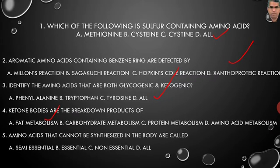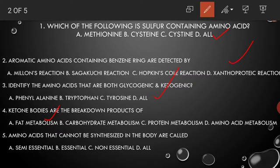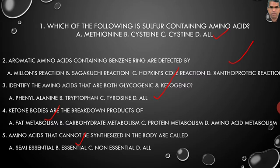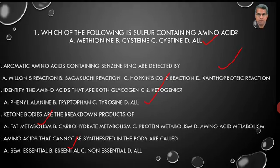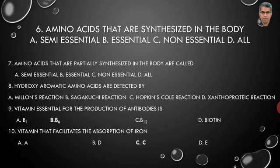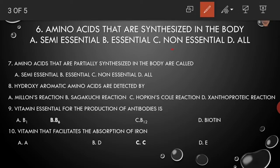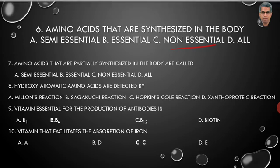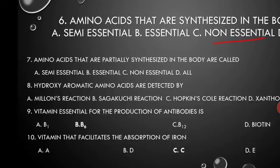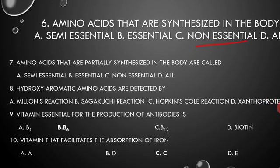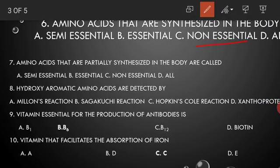Amino acids that cannot be synthesized in the body are called essential amino acids. Amino acids that are synthesized in the body are non-essential amino acids. Amino acids that are partially synthesized in the body are called semi-essential amino acids.